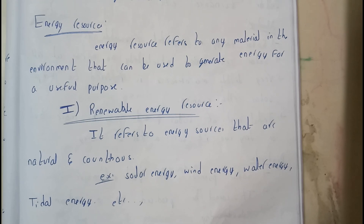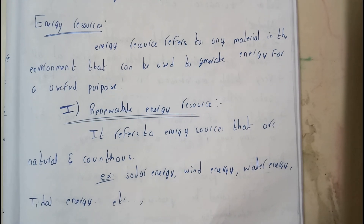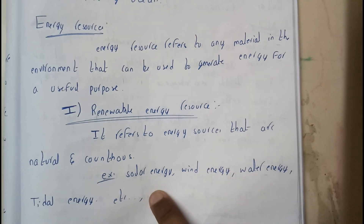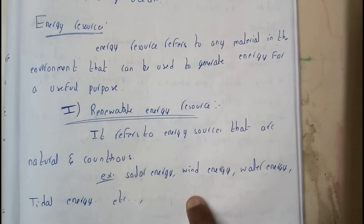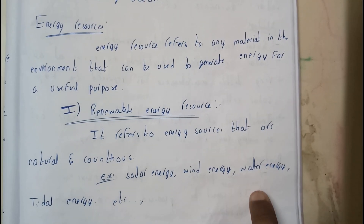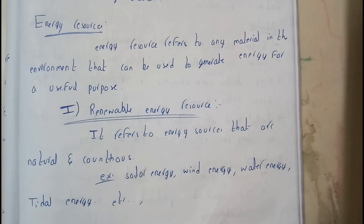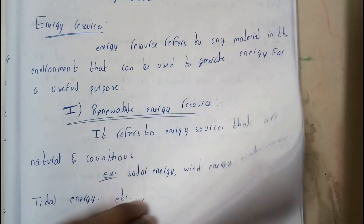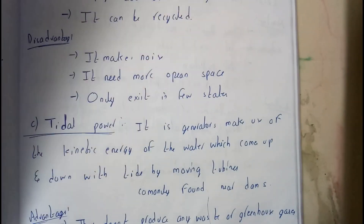Let's first go through renewable in depth and after that we'll go through non-renewable. In renewable, a few examples are solar energy, wind energy, water energy, and tidal energy. Let's go in depth into each of these examples.